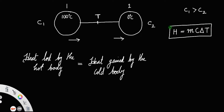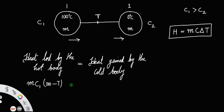Since these bodies are identical, their masses are equal — let us call the masses m. For the first body, mass is m, specific heat capacity is c1, and the change in temperature is 100 minus t, since the hot body cools down. For the second body, mass is m and specific heat capacity is c2.